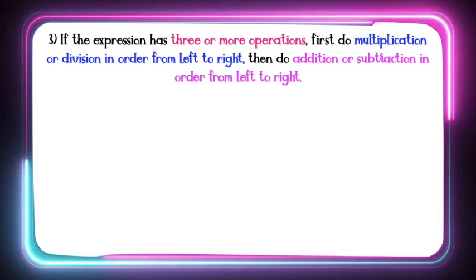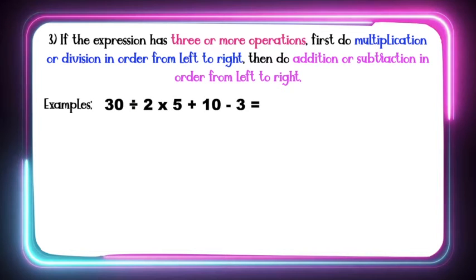Now let's proceed to the third rule. If the expression has 3 or more operations, first do the multiplication or division in order from left to right, then do addition or subtraction in order from left to right. Let's have this one: 30 divided by 2 times 5 plus 10 minus 3.